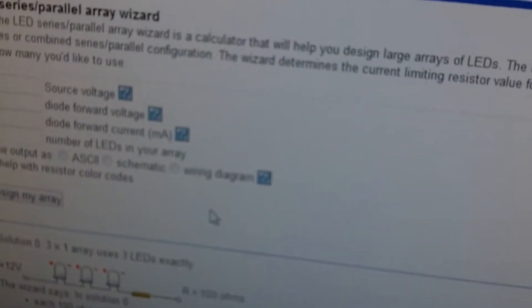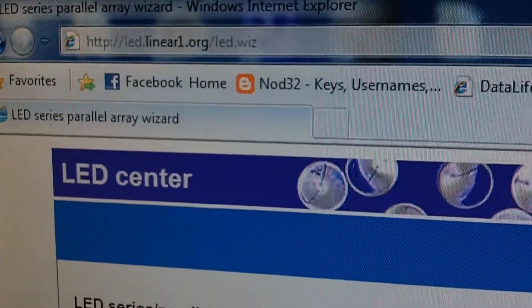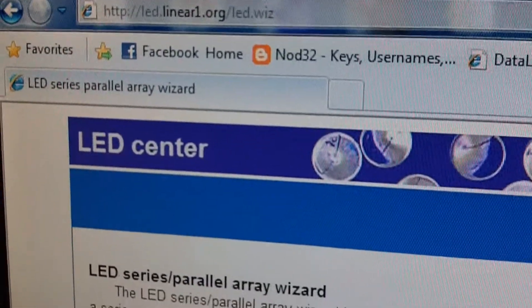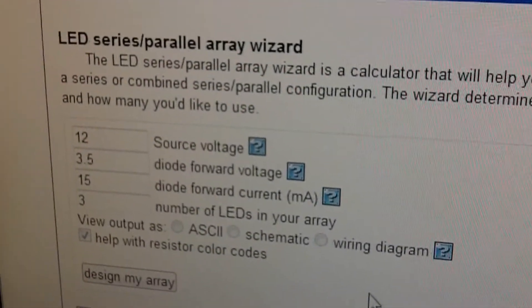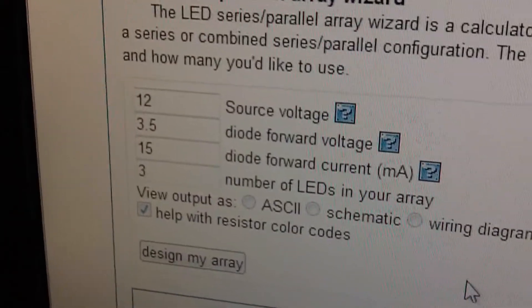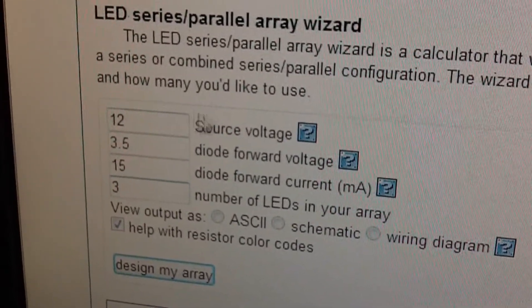Next thing you're going to want to do is figure out what kind of resistor you need. First of all, it depends on how many LEDs you're going to put in, and in this particular one I'm going to put in 3. So I went into Google and I typed in LED calculator, and it brought me to this site right here, ledlinear1.org, and I clicked the LED series/parallel array wizard, and in here I typed the info. So I needed 3 LEDs.